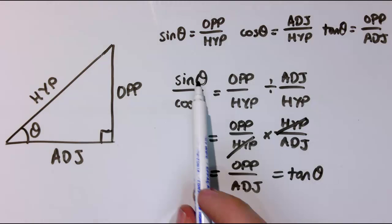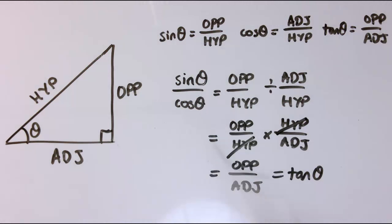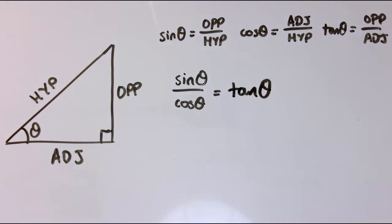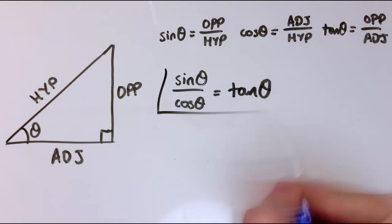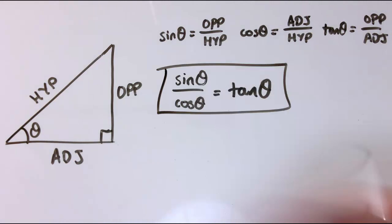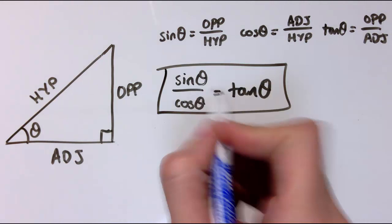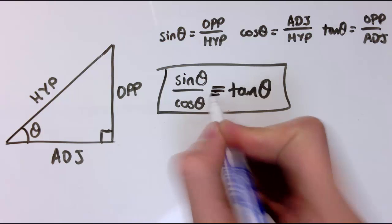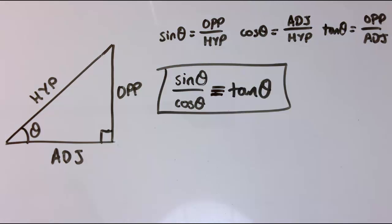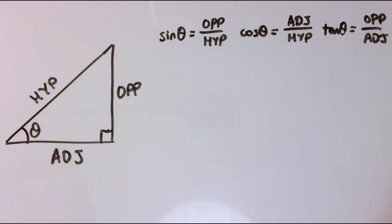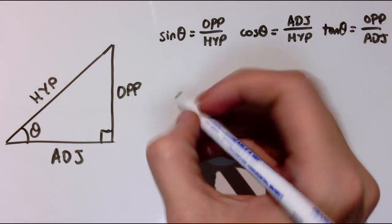The opposite divided by the adjacent is tan theta. So what I've shown is that sine theta divided by cos theta equals tan theta. That's useful identity number one. Because it's true for any value of theta, I can use the three-line equals sign, which means it's an identity, not just an equation.